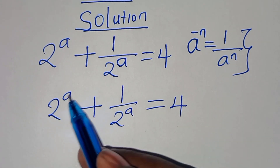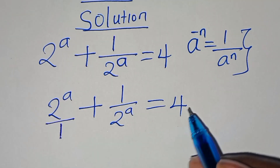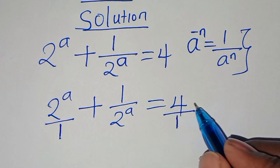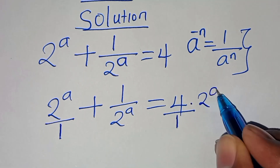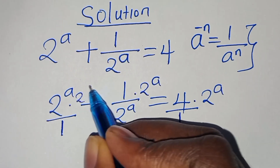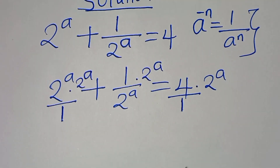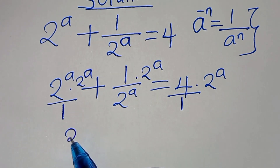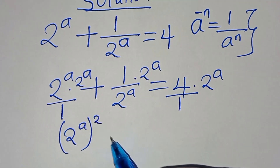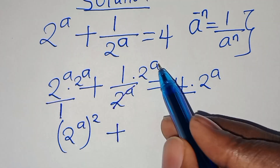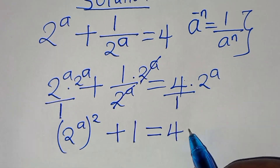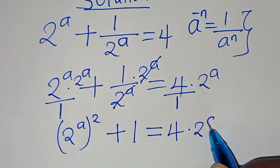Since 2 to the power of a is a whole number — so this is over 1 — and 4 is a whole number — so this is over 1. Let's multiply everything here by 2 to the power of a. So 2 to the power of a times 2 to the power of a is 2 to the power of a, everything here squared, then plus 1, and this is equal to 4 multiplied by 2 to the power of a.